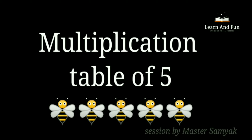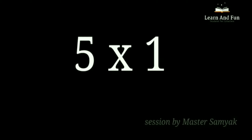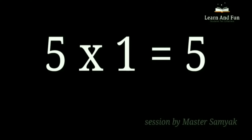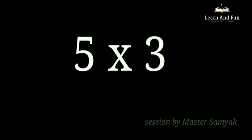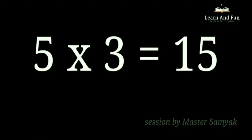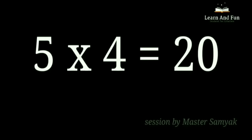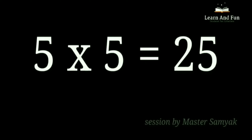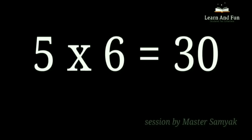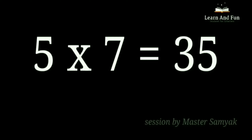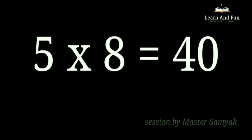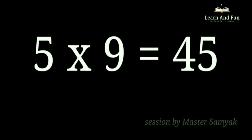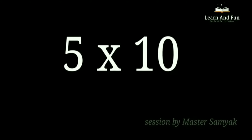Multiplication Table of 5. 5 ones are 5. 5 twos are 10. 5 threes are 15. 5 fours are 20. 5 fives are 25. 5 sixes are 30. 5 sevens are 35. 5 eights are 40. 5 nines are 45. 5 tens are 50.